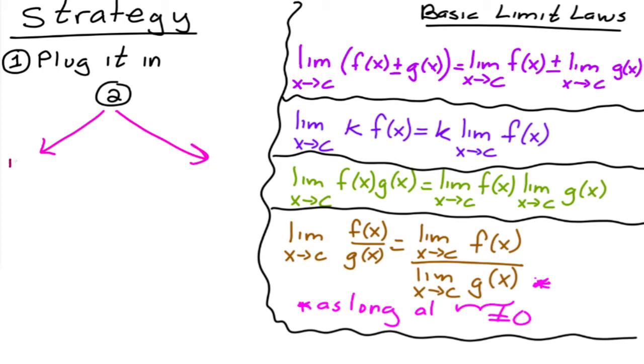You can get an indeterminate form that looks like zero over zero, infinity minus infinity, infinity over infinity, one to the infinity. So there are several indeterminate forms. Now, if this happens, then you do some more work.